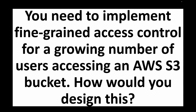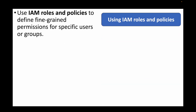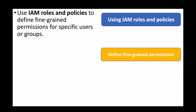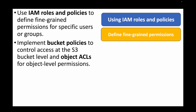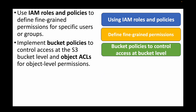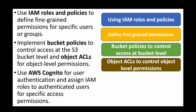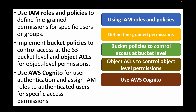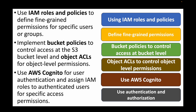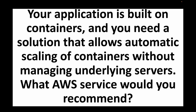The next question is: you need to implement fine-grained access control for a growing number of users accessing an S3 bucket — how would you design this? We use IAM roles and policies to define least privilege and fine-grained permissions for users and groups. We can also implement bucket policies at the S3 bucket level, use object ACLs for object-level permissions, and leverage AWS Cognito for authentication and authorization of users accessing specific services.